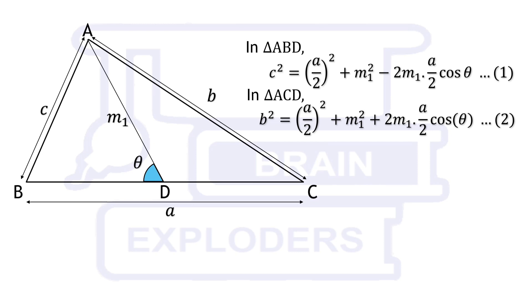Value of cos 180 minus theta is minus cos theta. On adding these equations, we get B squared plus C squared equals to 2 times the square of A by 2 plus 2M1 squared. This relation between sides of triangle and one of the medians is known as Apollonius theorem.